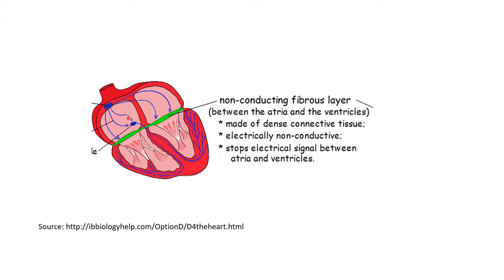This separation is beneficial for the pumping action of the heart, as it ensures that the atria and the ventricle function as two separate units. If the electrical activity were to spread directly from the atria to the ventricle, then the atria and ventricle would contract together as one unit, which would not be good for pumping. Instead, the atria contracts first, followed by the ventricle, ensuring effective pumping of blood by the heart.